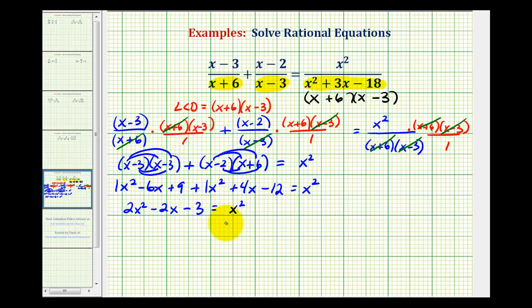Now we'll set it equal to zero by subtracting x squared on both sides. So then notice the right side would be zero and we have x squared minus two x minus three. Let's go ahead and move this over here and factor this.